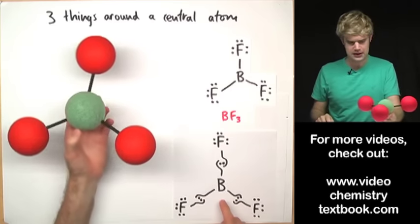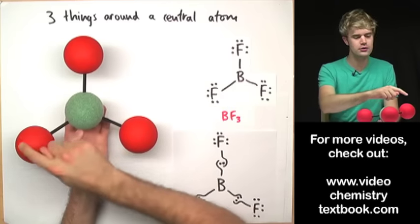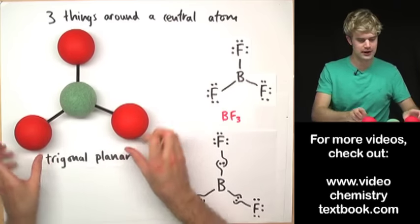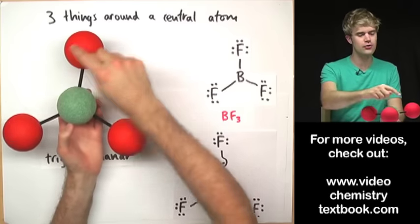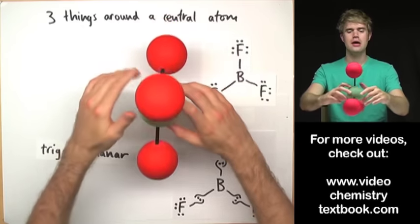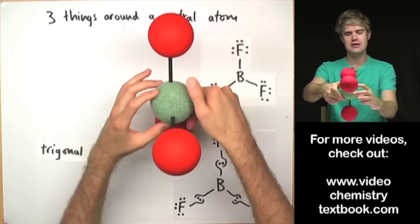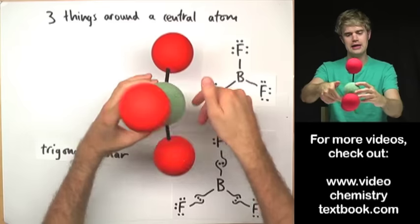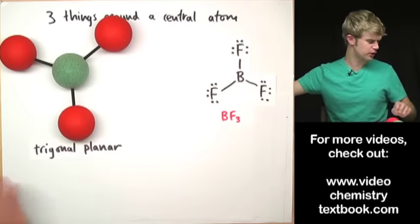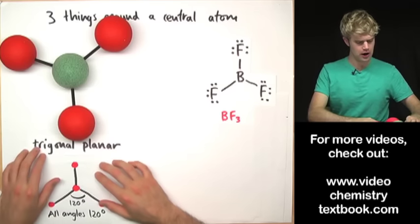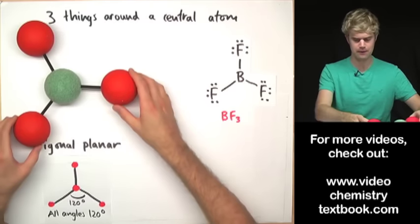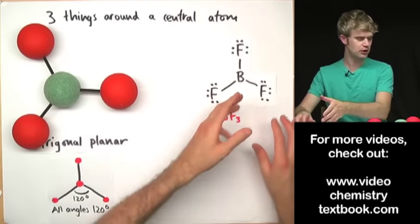The molecule is going to look like this: three atoms surrounding a central atom, giving the shape called trigonal planar. Trigonal comes from the fact that there are three things surrounding the center, and planar because all of these atoms are arranged in the same plane. The angles between the atoms in a trigonal planar shape are all 120 degrees — the angle between any two bonds is 120 degrees. So that is what BF₃ looks like in three dimensions.